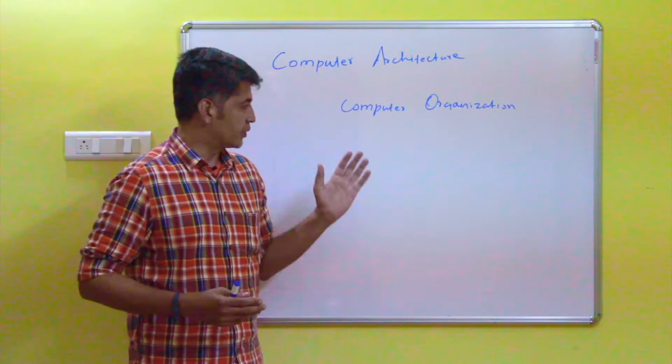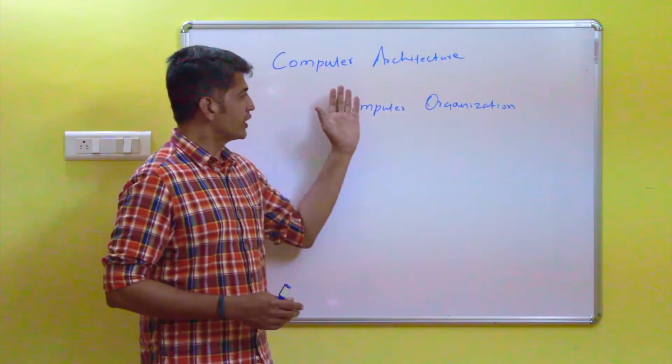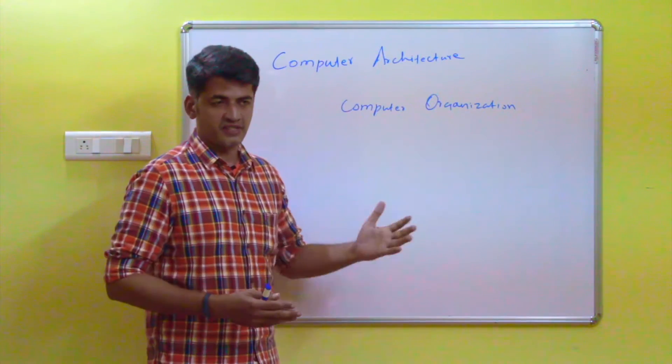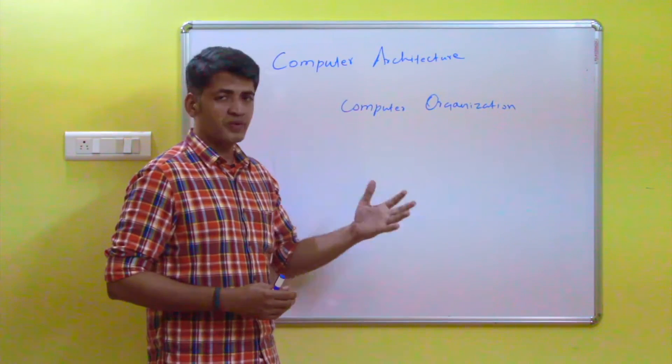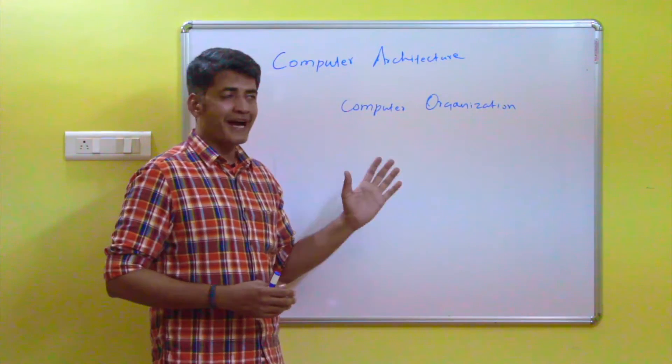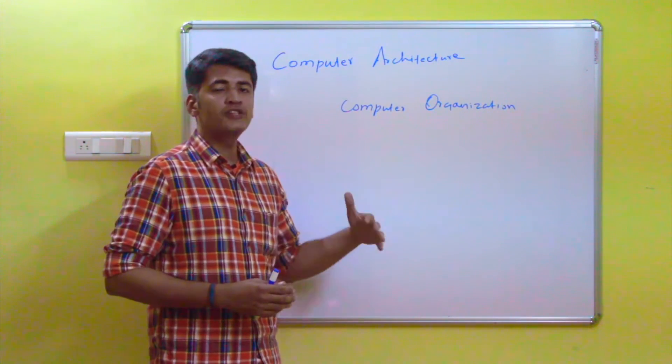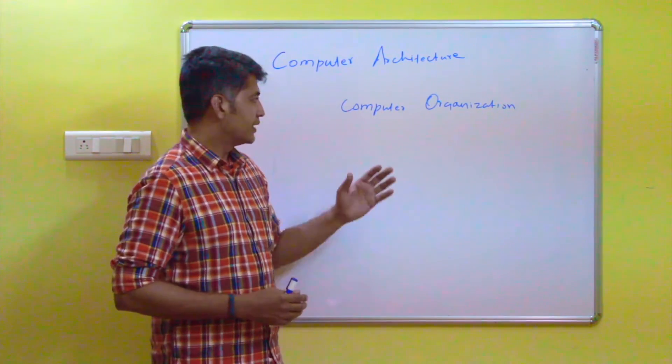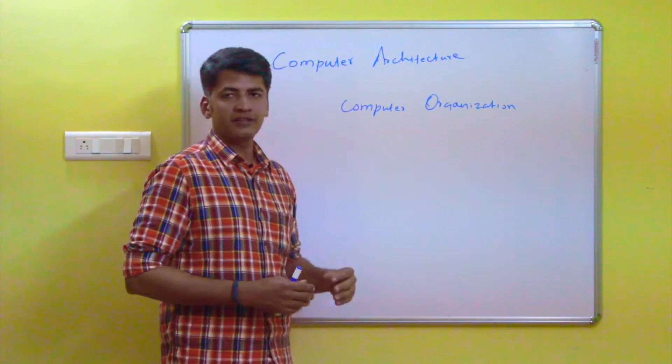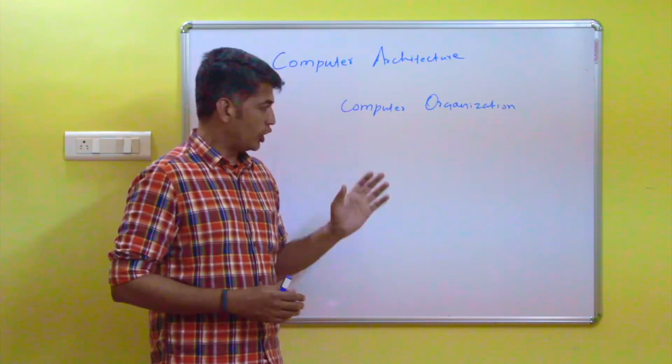Computer architecture and computer organization. Computer architecture always refers to the system attributes. These system attributes give a direct impact on the logical execution of a particular program. At the same time, if you are checking computer organization, it always